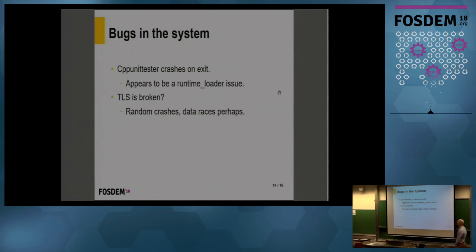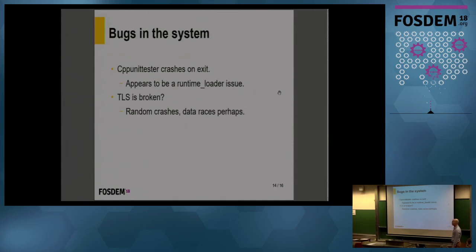There are also bugs in the system. CPP unit tests can't be run because the CPP unit tester crashes on exit — it appears to be a runtime loader issue. It doesn't run pthread destructors when unloading the library; it tries to do that on application exit, but the library is already unloaded, so the code is not there and it crashes. I also think TLS is broken, but it's over my head. The issue was that when I was working on the SIL frame and added another member, it started randomly crashing. I worked around it by moving members to another structure and it works, but I have no idea what is happening there. Memory dumps are just garbage. It just needs some debugging.